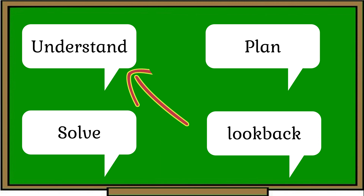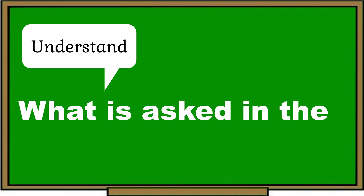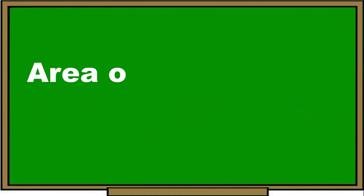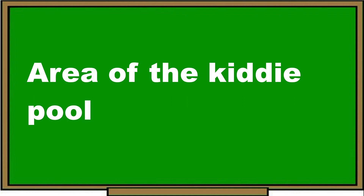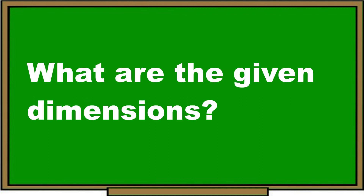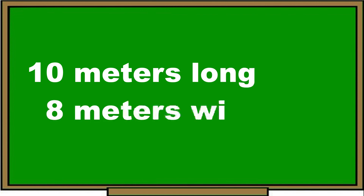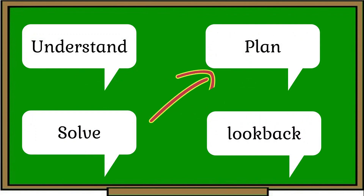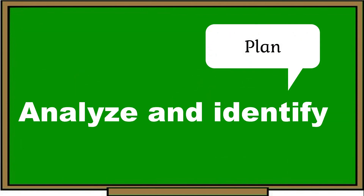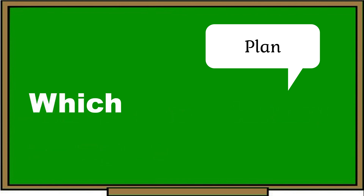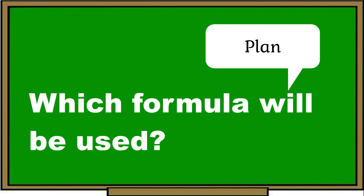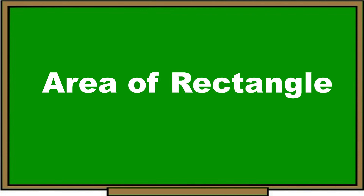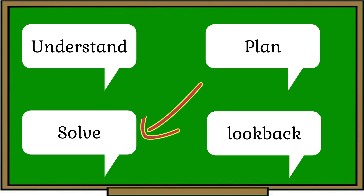The first step is understand. You have to understand the problem and find out what is asked. The area of the kiddie pool is being asked. The given dimensions are 10 meters long and 8 meters wide. Next, make a plan: analyze and identify the figure, and determine which formula will be used. In this problem, we use the formula for the area of a rectangle. Draw a picture to represent the word problem.